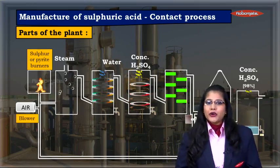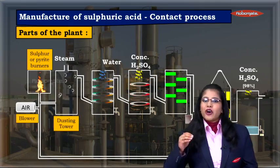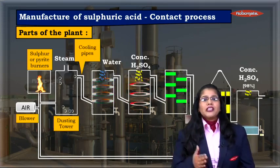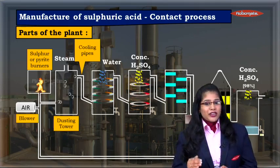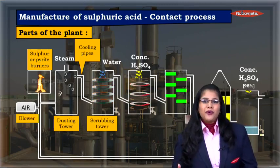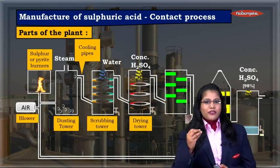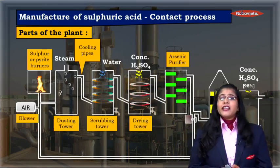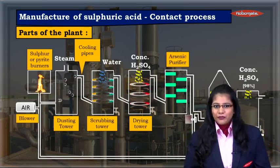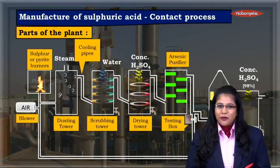The next part of the set up is for cleaning the sulphur dioxide so formed. Sulphur dioxide is first put into the dusting tower where all the dust particles are settled down. Further it is sent through cooling pipes where sulphur dioxide is cooled. After which it is taken to the scrubbing tower for further removal of dust particles, and then to the drying tower to remove any moisture present. Finally it goes to the arsenic purifier where arsenic oxide impurities are removed. Whether all the impurities are removed or not can be tested using the small testing box.